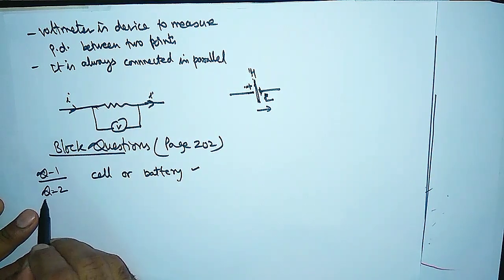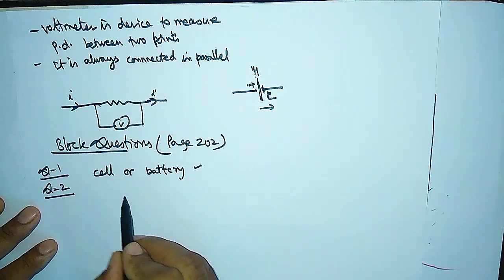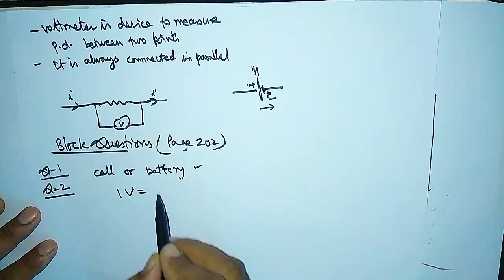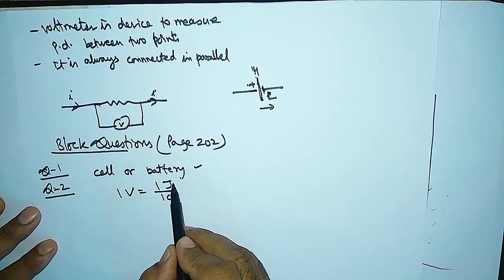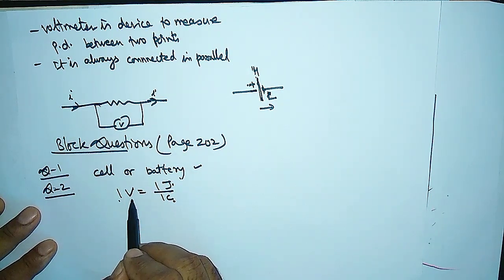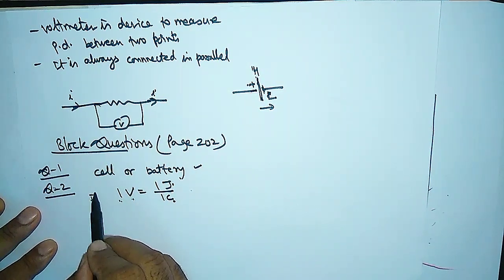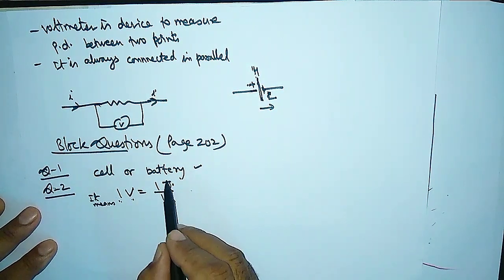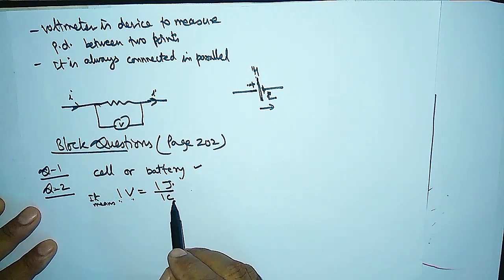Question 2: What is meant by saying that the potential difference between two points is 1 volt? One volt means 1 joule upon 1 coulomb. It means if 1 joule of work is done in carrying 1 coulomb of charge from one point to another, then the potential difference between those points is 1 volt.